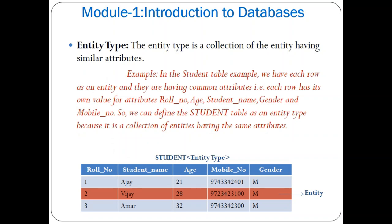What is an entity type? An entity type is a collection of entities having similar attributes. For example, in a student entity type, the attributes are role number, student name, age, mobile number, and gender. Each row is an entity with its own values for these attributes. The student table is an entity type because it is a collection of entities sharing the same attributes. For instance, role number 2 — student Vijay, age 28, mobile 9723423100, gender male — is one entity.